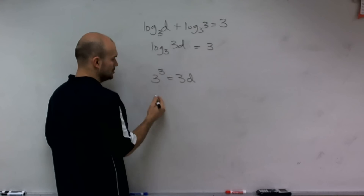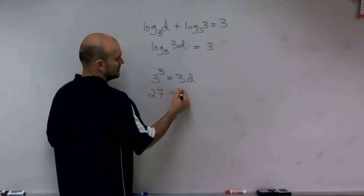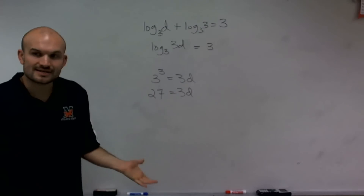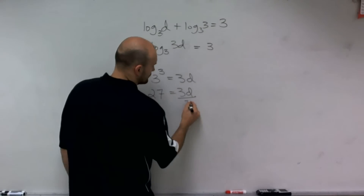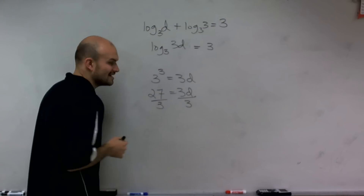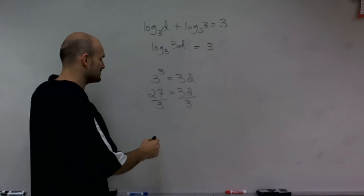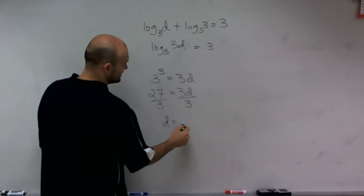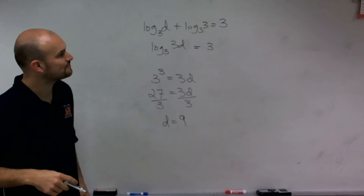3 cubed we know is 27, so 27 equals 3d. Now I just need to solve for d, so I divide by 3 on both sides using my division property of equality, and I get d equals 9.